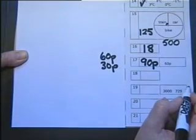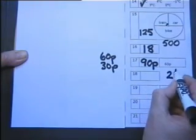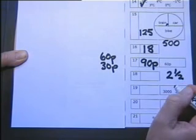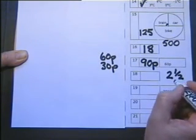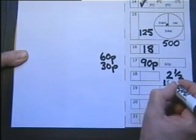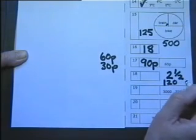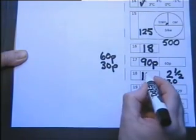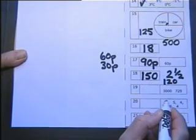Number 18: How many seconds are there in 2 and a half minutes? I'd write that information in the space outside the box. 1 minute is 60 seconds, so 2 minutes would be 120 seconds. Half a minute is 30 seconds — add 30 to 120 and you end up with 150 seconds.